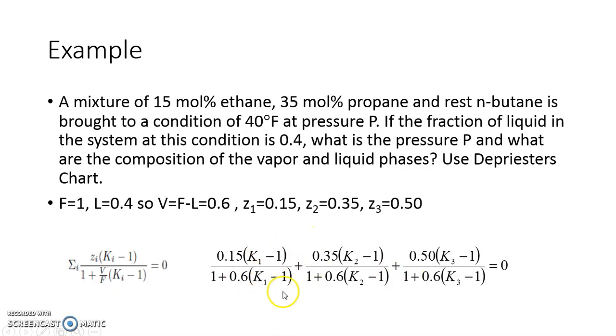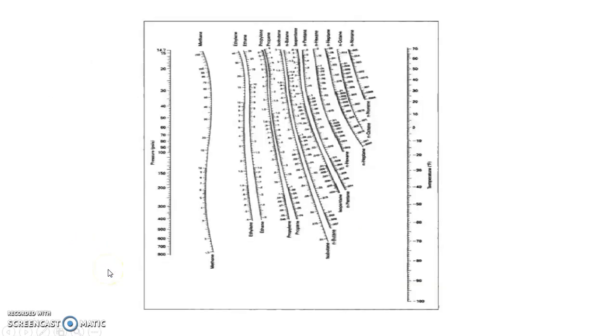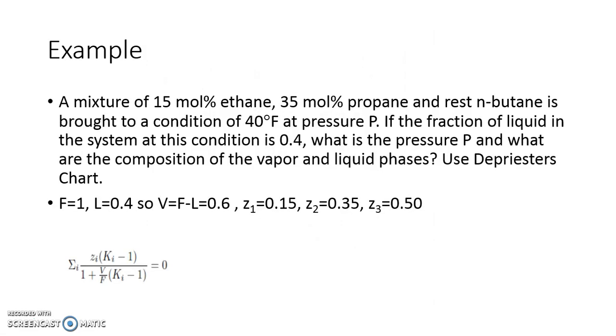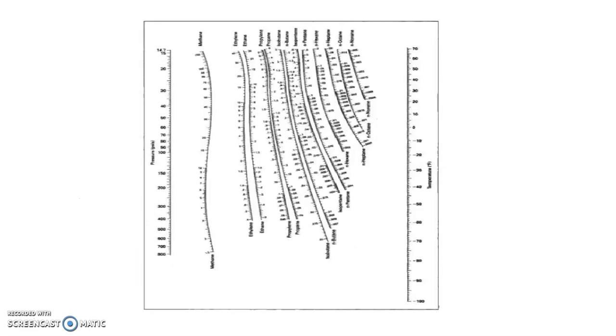That will give you the value of V. When you have a data in front of you, what you have to understand is what is given to you as F, L or V, and Z1, Z2, Z3. Once you understand that, you can put it along with this equation, we will use DePriester chart and solve for either fraction vaporized or temperature or pressure of operation. This is how we use DePriester chart in order to calculate flash operation.